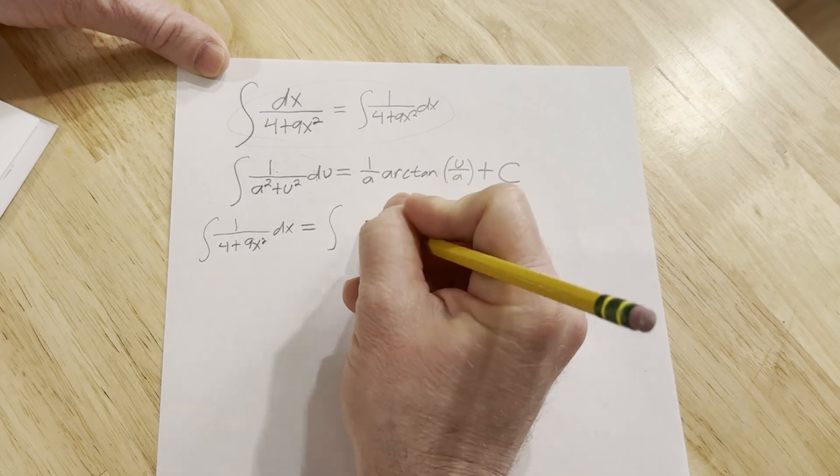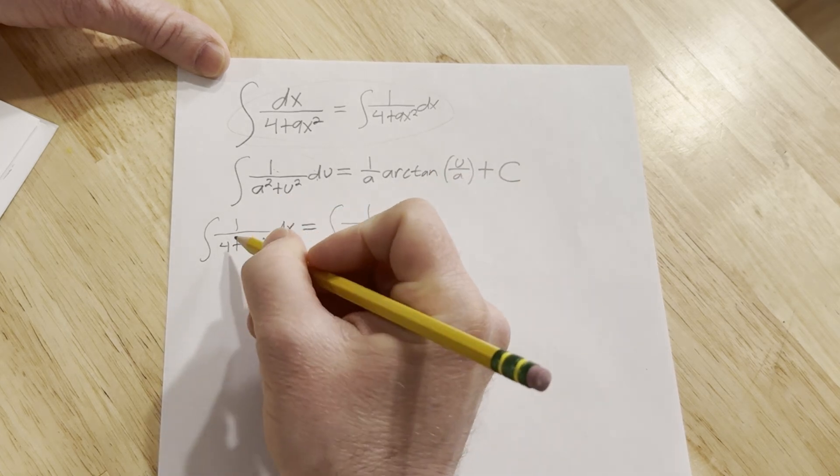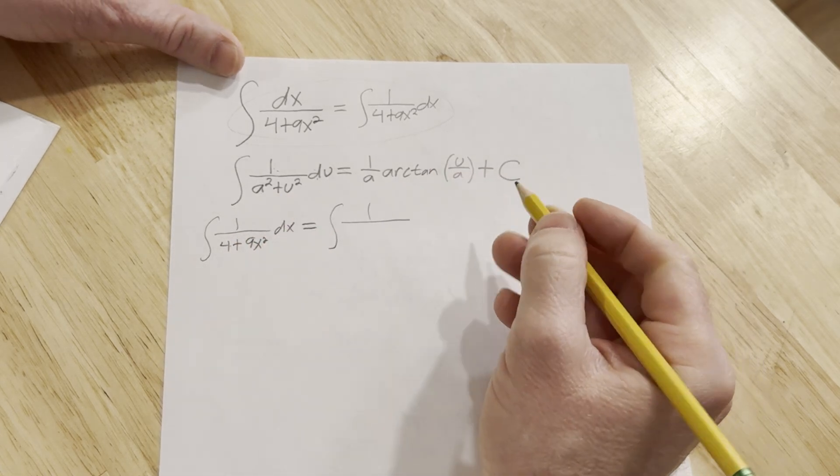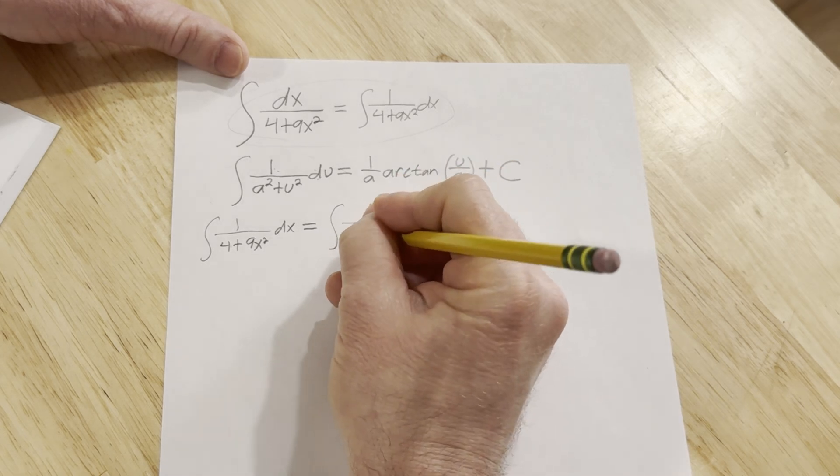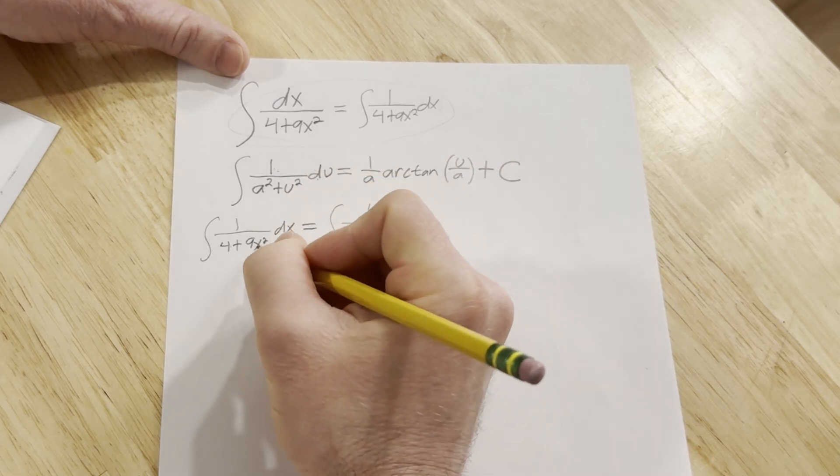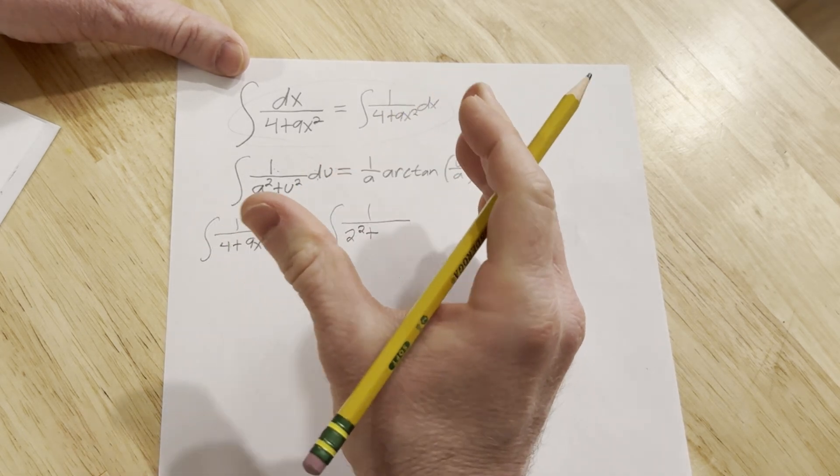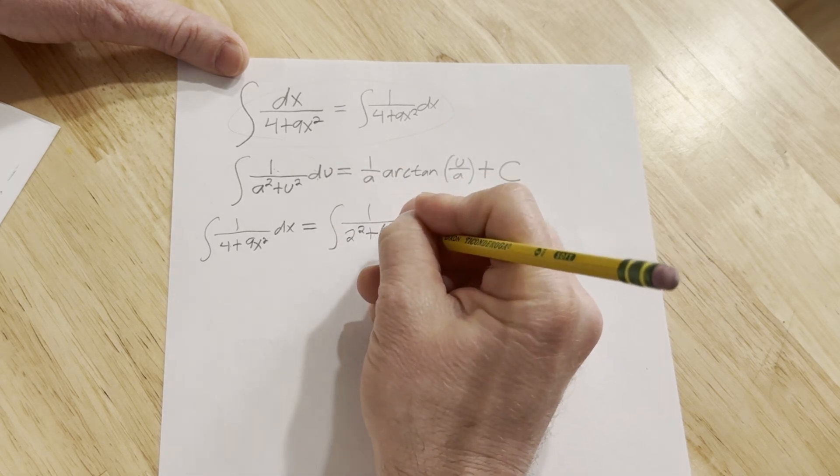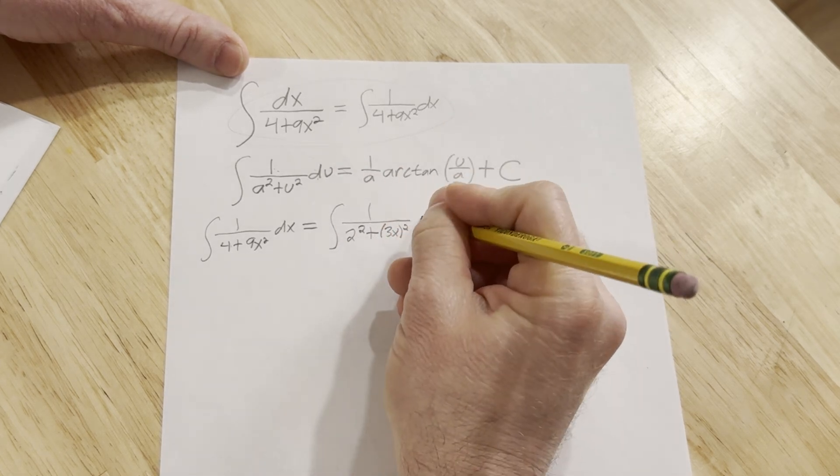And so we can write this as the integral of 1 over... So the 4 can be written as a number squared, and that number would be 2. So this will be 2 squared plus, and then the 9x squared, we want to write that as something squared. So we can write that as the quantity 3x squared. And then here we have the dx.